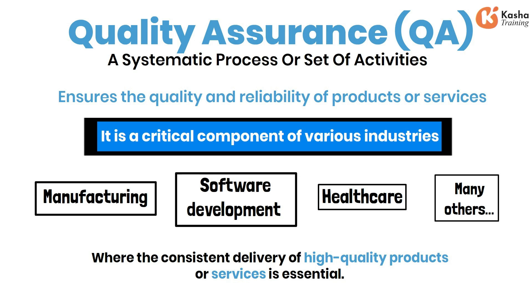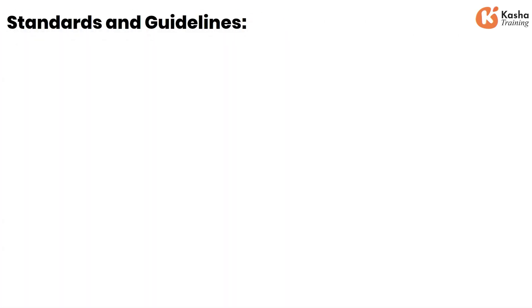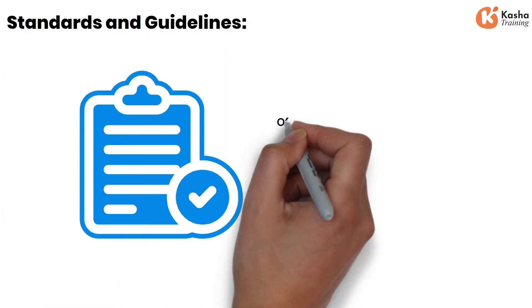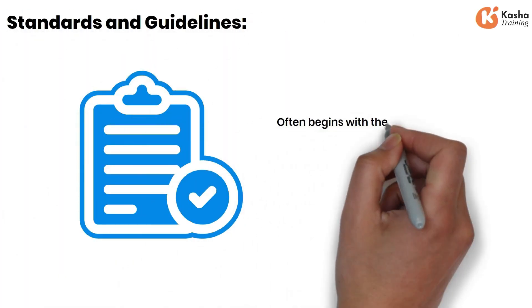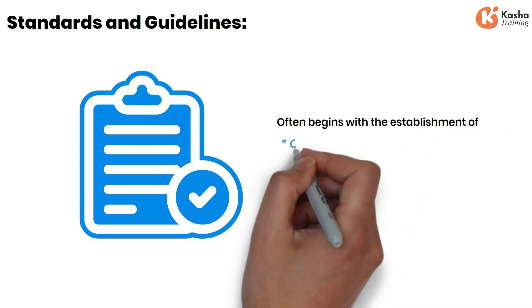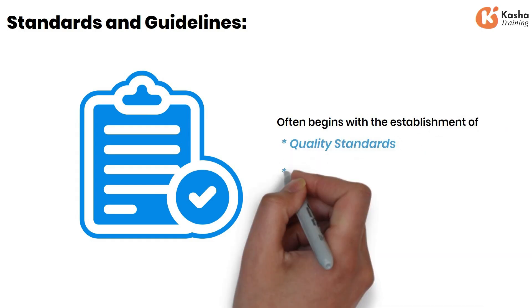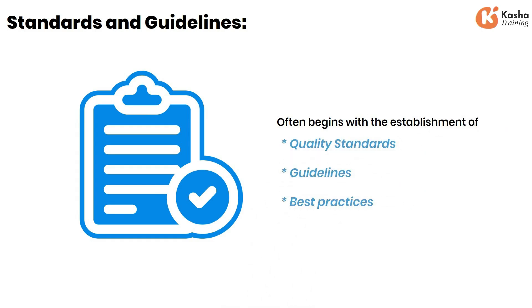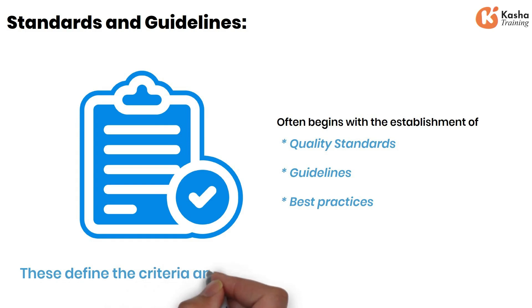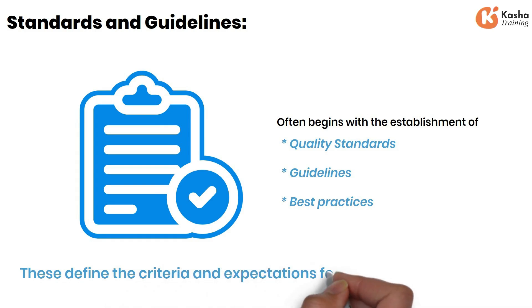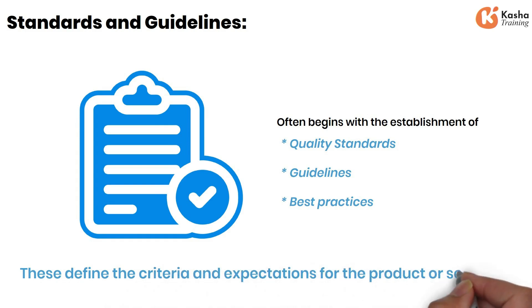Key principles and activities associated with Quality Assurance include Standards and Guidelines. QA often begins with the establishment of quality standards, guidelines, and best practices. These define the criteria and expectations for the product or service.